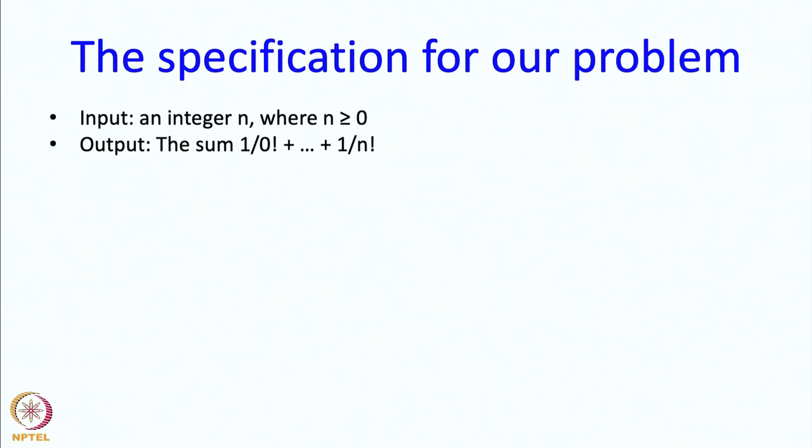So notice that 0 as input makes sense because then that just means that you get the first term which is 1. That is of course nowhere close to e but we did not really promise that it would get close to e for such a small value of n in any case. Now, in this particular example, for this particular problem, the specification is fairly straightforward.